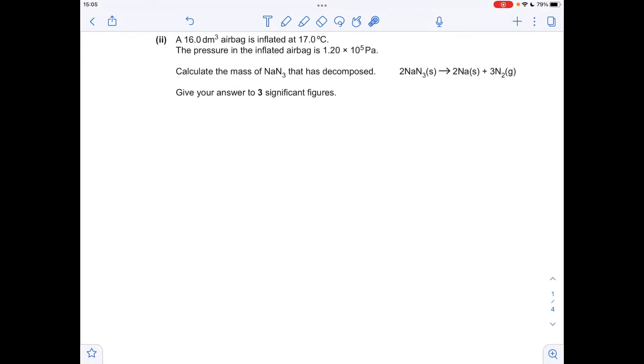Moving on to calculate the mass of NaN3 that's decomposed. The pressure inside the bag is caused by the production of nitrogen gas. We're using the ideal gas equation to calculate the moles of nitrogen, then apply the ratio backwards to get moles of NaN3 and turn that into grams. PV equals NRT, rearranging to get n equals PV over RT.